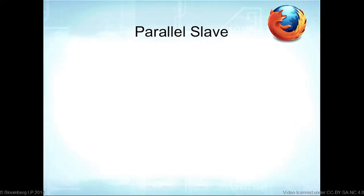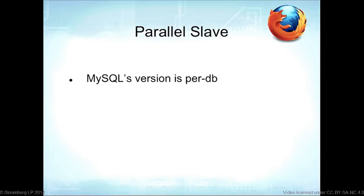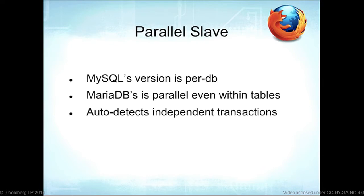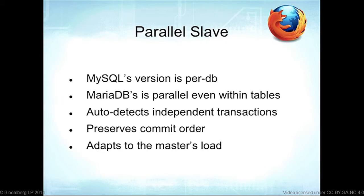Parallel slaves in MariaDB: MySQL's parallel replication is per-database, so if all activity is in one database you don't get good parallelism. MariaDB's parallel slaves work within tables — it figures out what operations are independent of each other and runs those in parallel, while preserving commit order. It also adapts to the master's load automatically, without much configuration needed.